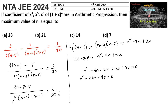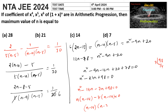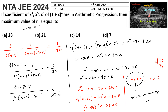Factoring n² − 21n + 98 = 0: we write it as n² − 14n − 7n + 98 = 0, giving n(n−14) − 7(n−14) = 0, so (n−14)(n−7) = 0. Thus n = 14 or n = 7. The question asks for the maximum value, so the maximum value of n is 14, which is option C.